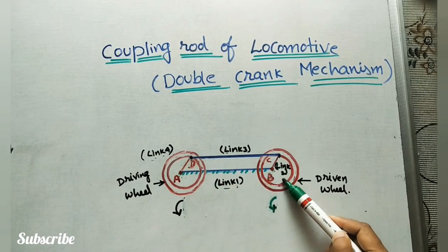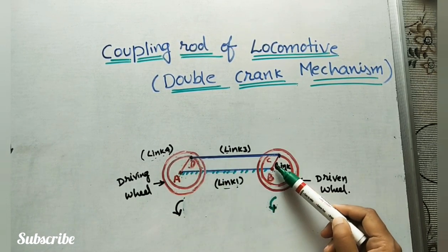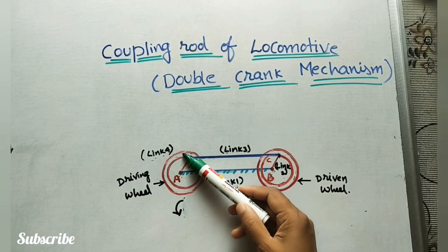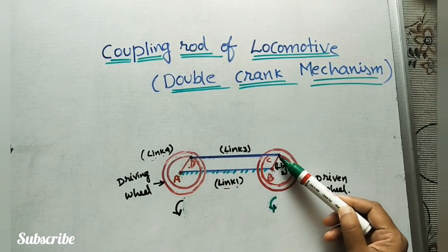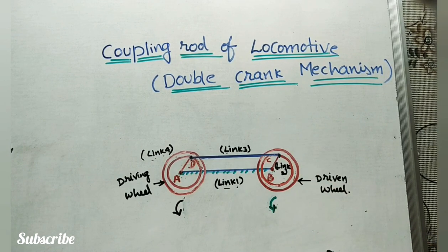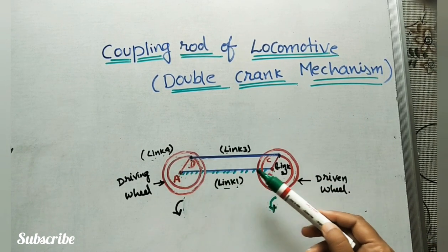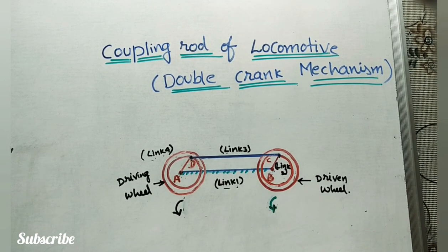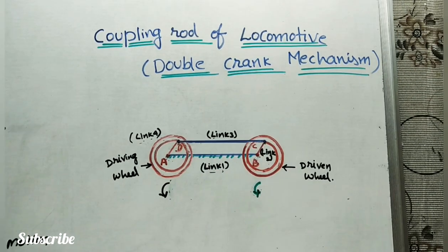These are of equal lengths and are connected to the wheels. Here one wheel, and BC crank is connected to another wheel. These two cranks are the two links. The next link is...